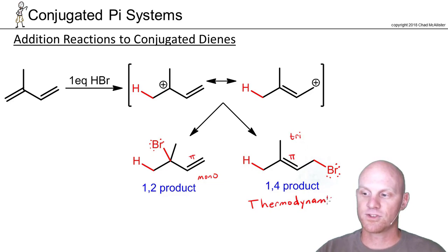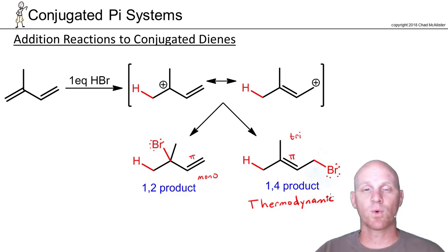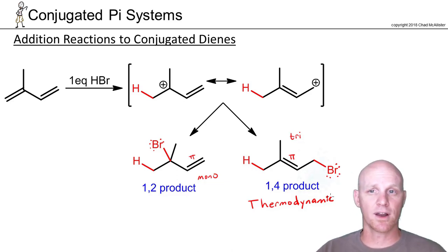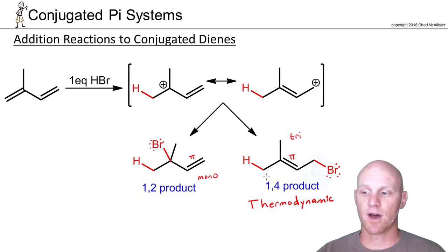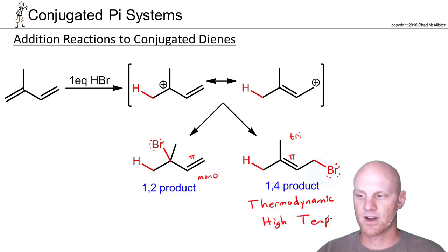In addition reactions to conjugated systems, whichever product has the more substituted pi bond is the more stable product and is therefore the thermodynamic product. The thermodynamic product is favored at high temperatures.